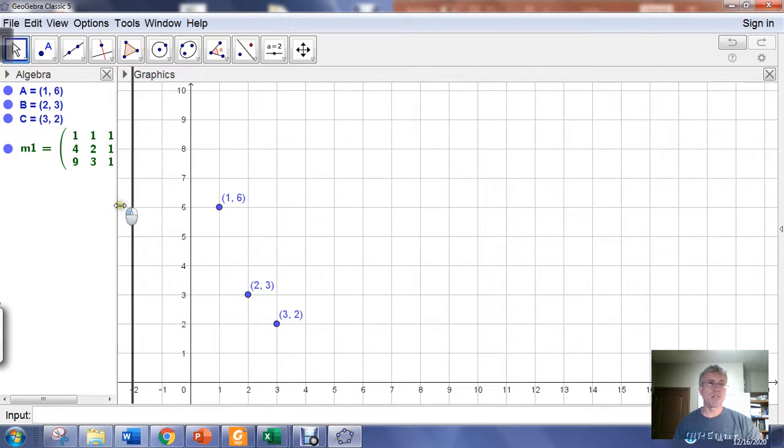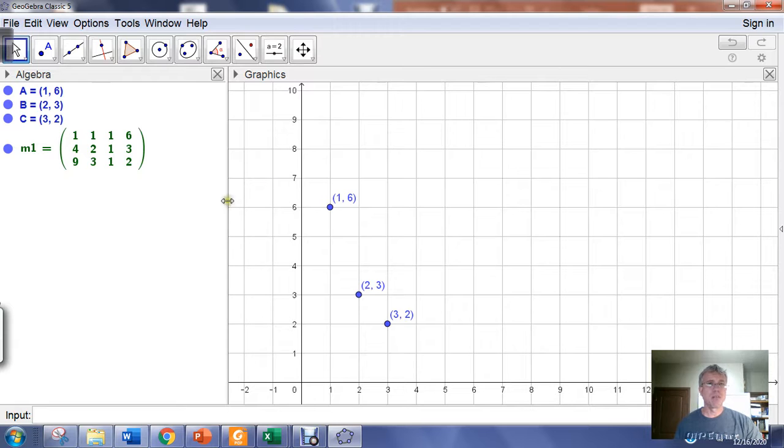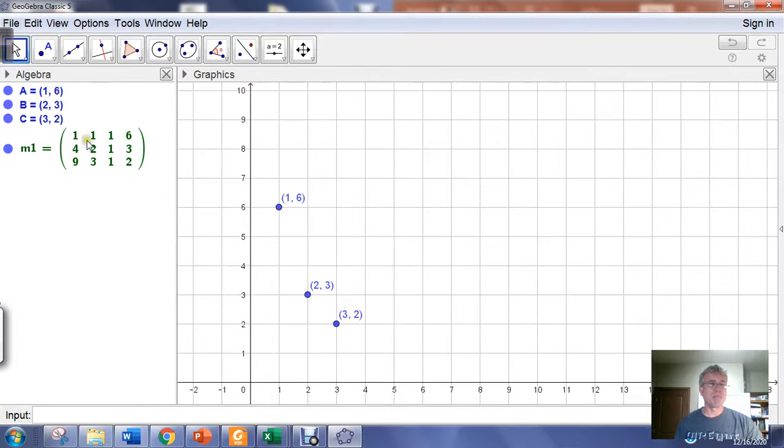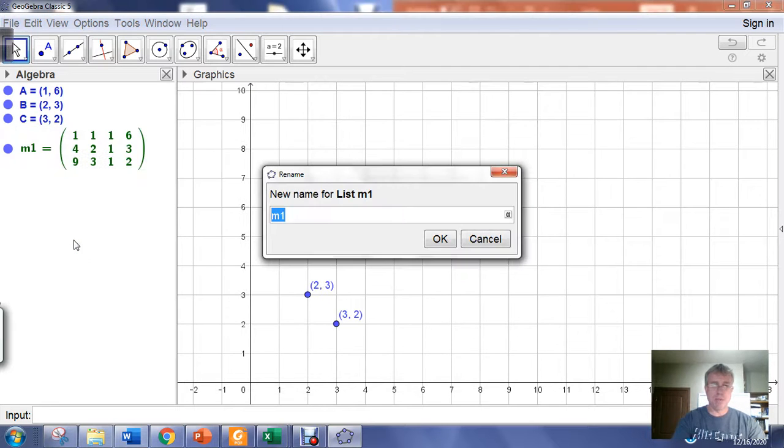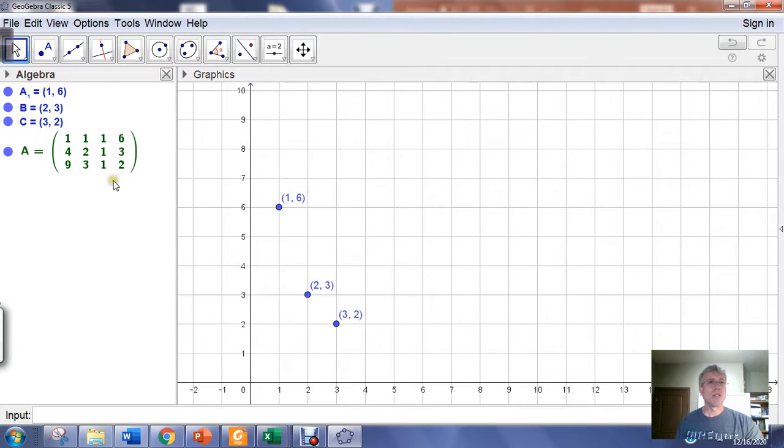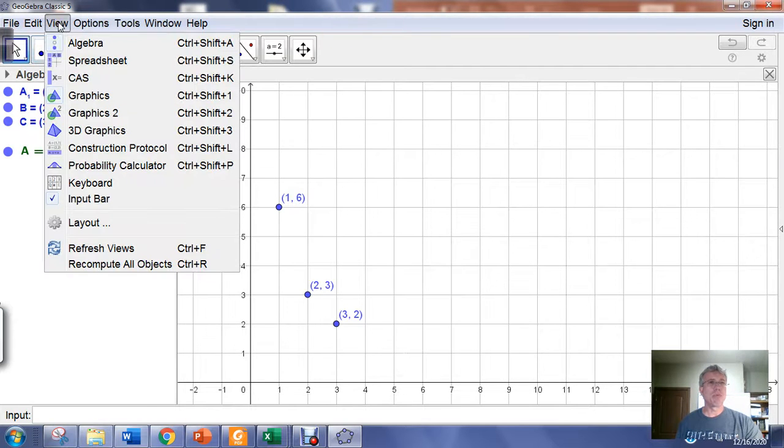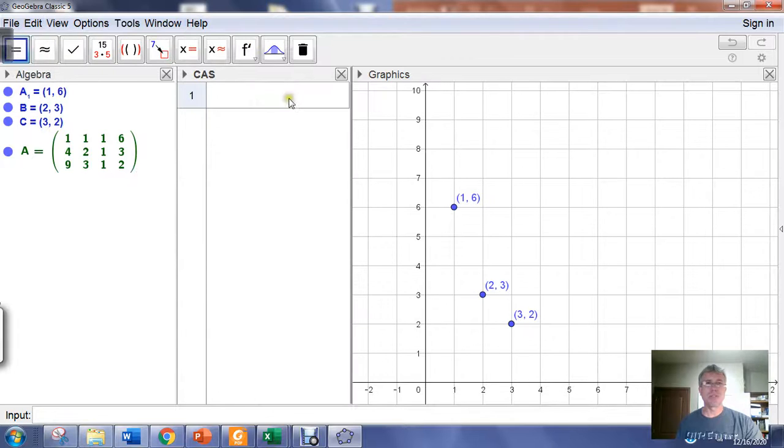I just closed the spreadsheet view. It sends my matrix into the algebra window. I'm going to right click and rename it capital A. Then using view, I'm going to open my computer algebra system window.